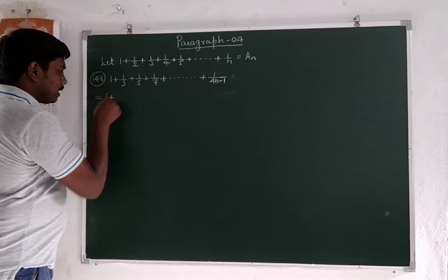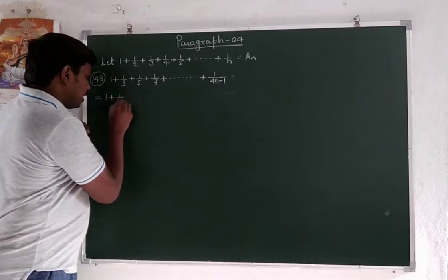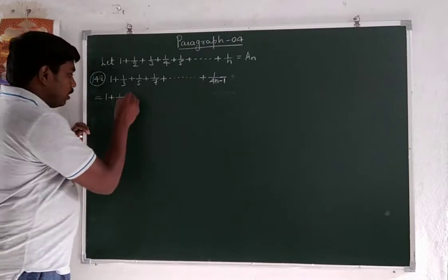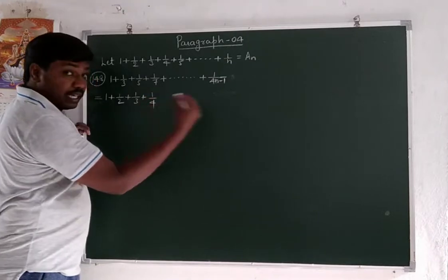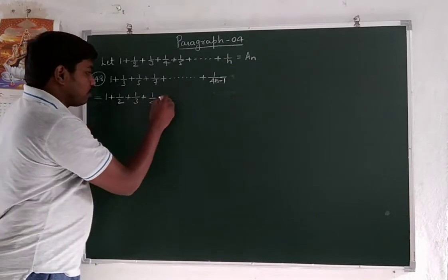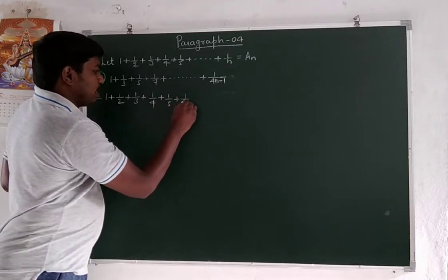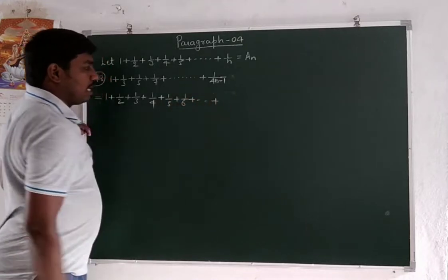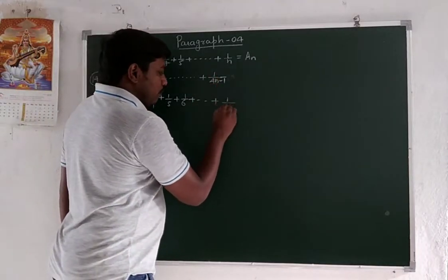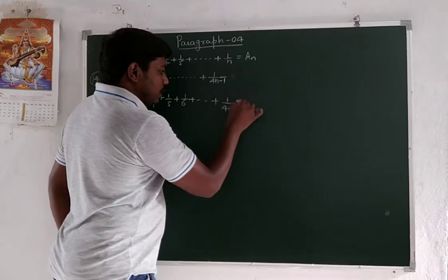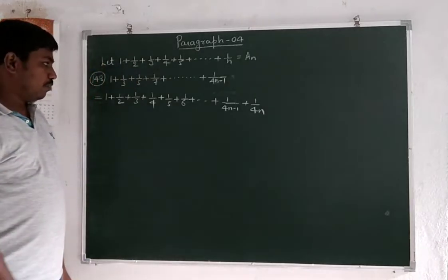So 1 plus 1 by 2 — 1 by 2 add, 1 by 2 subtract. 1 by 3. 1 by 4 add, 1 by 4 subtract. Plus 1 by 5, plus 1 over 6, up to... plus 1 over 4n minus 1, next term is 1 over 4n.